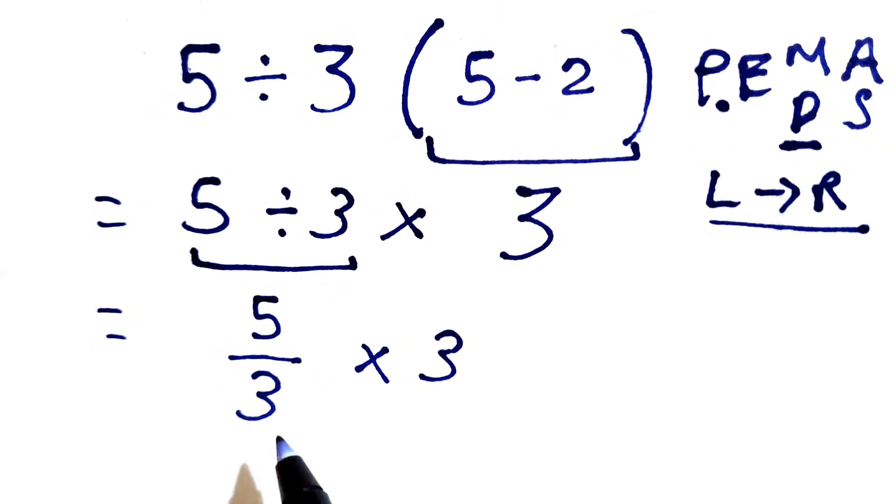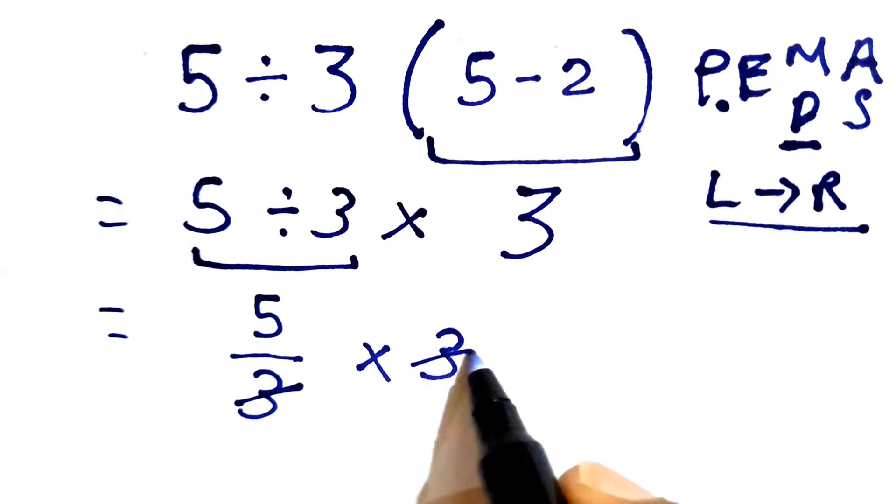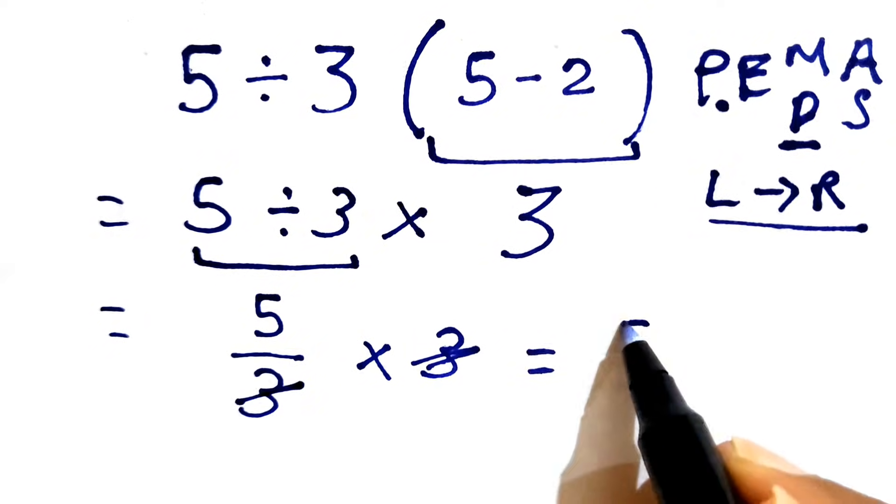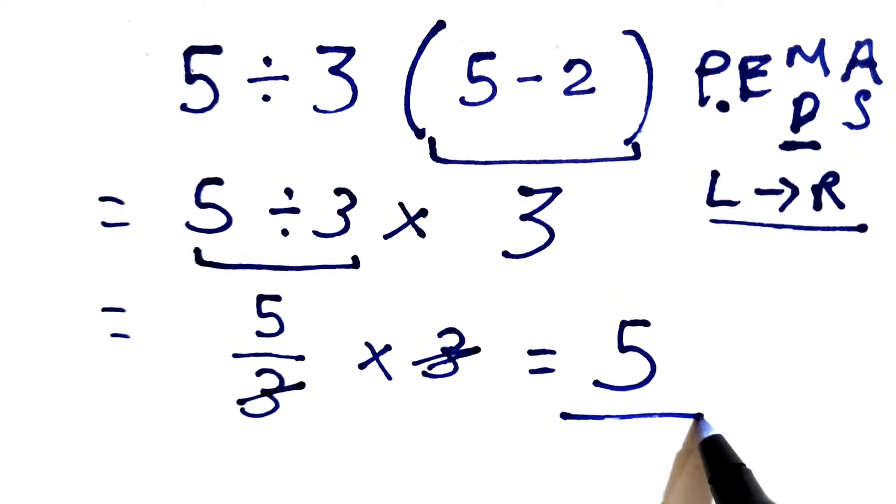Now in this expression, we can simply cancel this 3 and this 3, so we are only left with 5. This is the final correct answer.